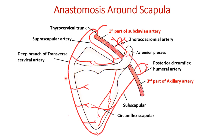In total, this diagram shows both the anastomosis around the body of the scapula and the anastomosis over the acromion process, with all the branches we have discussed. This should be the complete diagram to illustrate anastomosis around the scapula.